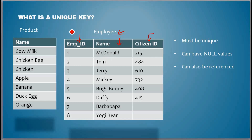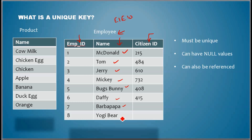Mr. McDonald — from 'Old McDonald Had a Farm' — started this company EI EI O Inc, and then he hired these people: McDonald himself as the first employee, then Tom, Jerry, Mickey, Bugs Bunny, Daffy, Barba Papa, and Yogi Bear. These are cartoon characters I grew up watching and I still love those cartoons.